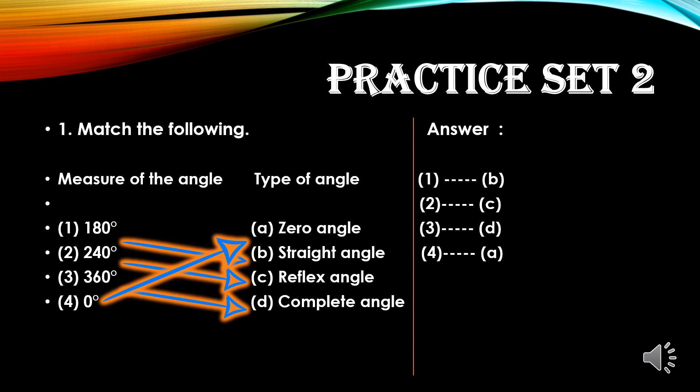Third one: 360 degrees. An angle with measure 360 degrees is called a complete angle, so third will be matched with D. And zero degrees — the measure itself says zero angle. Zero degrees means zero angle.